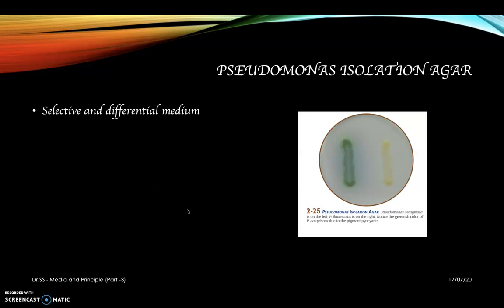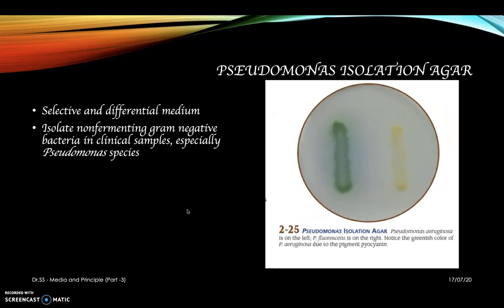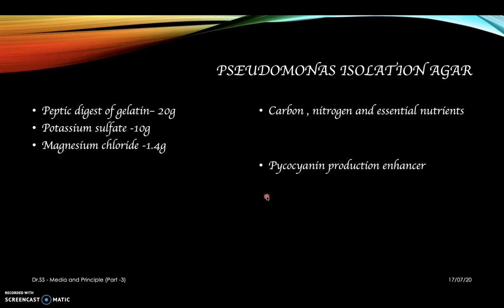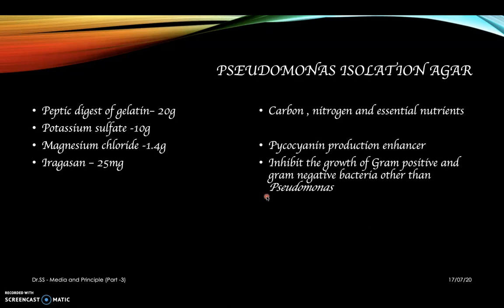Next is pseudomonas isolation agar. It is a selective and differential medium, mainly used for the isolation of Pseudomonas organisms. Two types of Pseudomonas species are streaked: Pseudomonas aeruginosa and Pseudomonas fluorescens. Pseudomonas aeruginosa shows a green color because it produces the pigment pyocyanin. The compositions include peptic digest of gelatin as the source of carbon, nitrogen, and essential nutrients, potassium sulfate as a sulfate source, and magnesium chloride — these enhance pyocyanin production and fluorescence.